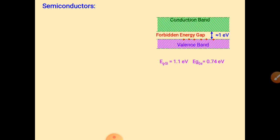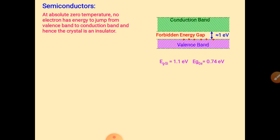The energy band gap for silicon is 1.1 electron volt and for germanium is 0.74 electron volt. Germanium requires a very small amount of energy for electrons to move toward the conduction band. At absolute zero temperature, electrons having this energy can easily move into the conduction band.